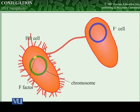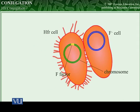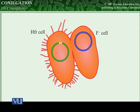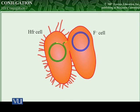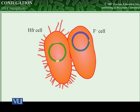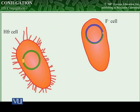The cells come together and stabilize, probably through fusion of their cell membranes, and the transfer of DNA begins. DNA transfer begins in the middle of the F-factor within the HFR cell's chromosome. Usually, the chromosome breaks before it is completely transferred. As a result, the F-minus cell does not receive a full copy of the F-factor.